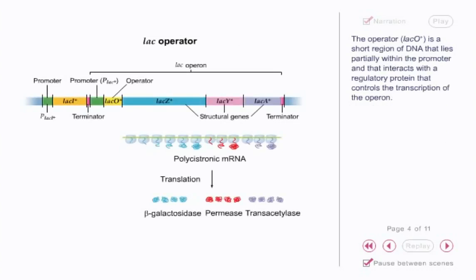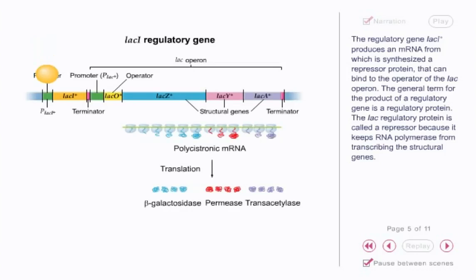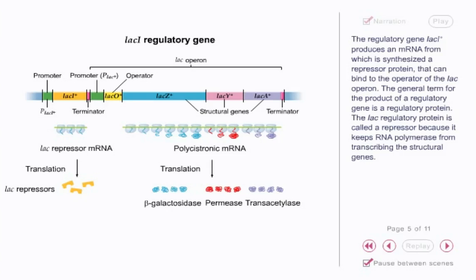The operator, lacO, is a short region of DNA that lies partially within the promoter and interacts with a regulatory protein that controls the transcription of the operon. The regulatory gene lacI produces an mRNA from which is synthesized a repressor protein that can bind to the operator of the lac operon. The lac regulatory protein is called a repressor because it keeps RNA polymerase from transcribing the structural genes.